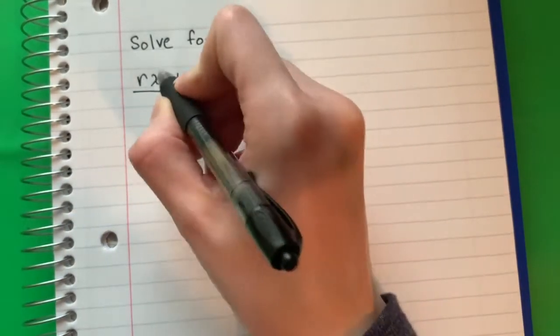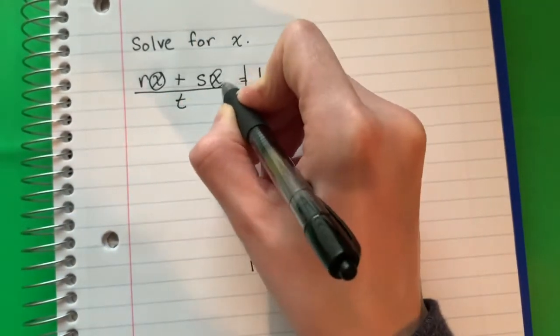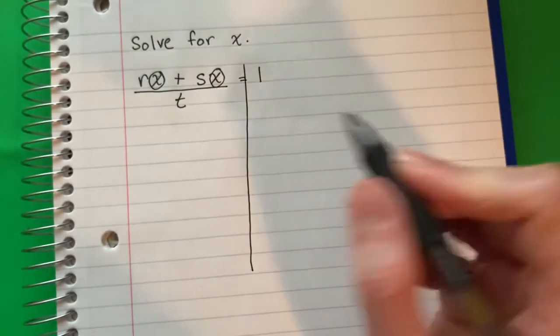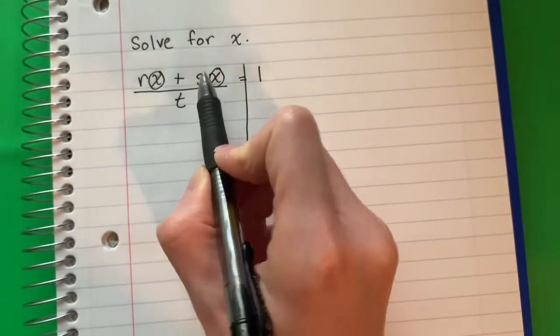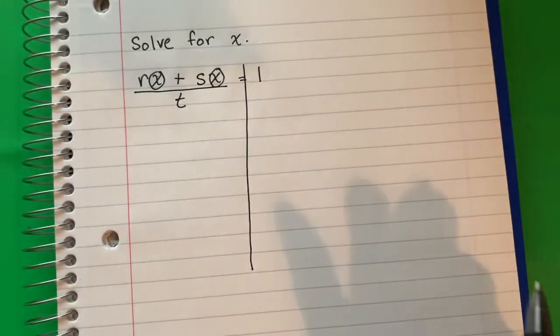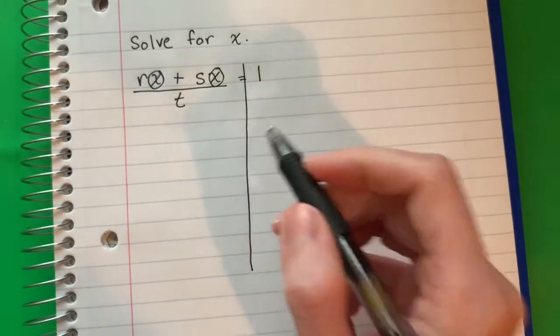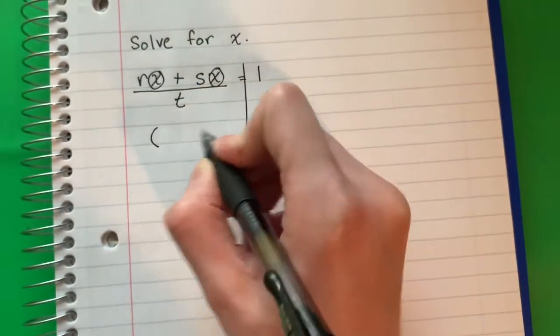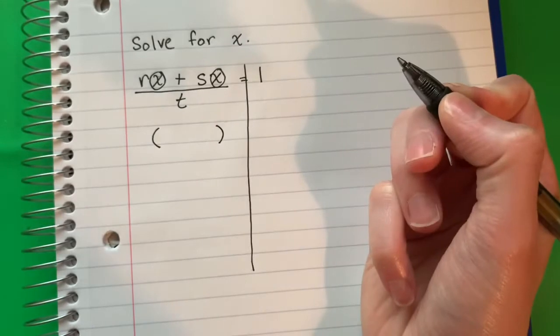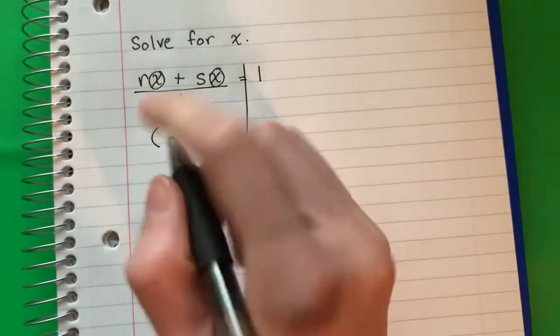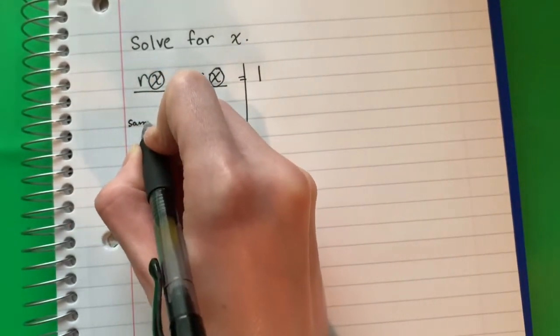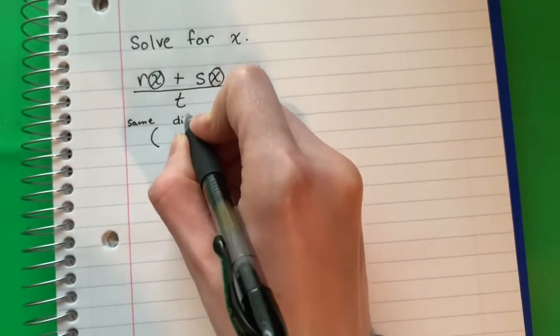I want to solve for x and I have two x's. So what I'm going to do here first is I'm going to separate the x from everything else. So I'm going to do parentheses and remember what is outside is what is the same and what is inside is what is different.